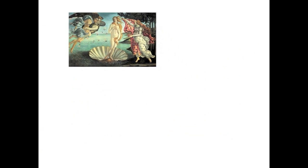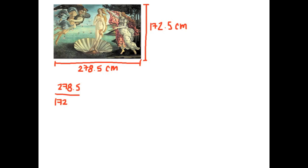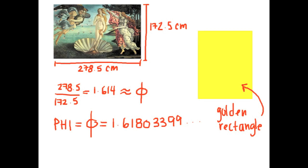We figured there must be some sort of pattern in the painting, so we started to look for proportions. First, we looked at the canvas itself. Its width, according to the Uffizi Gallery, measures 278.5 centimeters, and its height measures 172.5 centimeters. When we divided 172.5 into 278.5, we arrived at the number 1.614. This number is very close to a well-known irrational number known as phi. Phi is equal to 1.618033, and so on. When a ratio appears in a rectangle, this is often referred to as a golden rectangle — a very special ratio that can be found throughout nature.